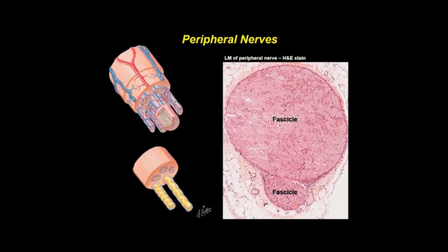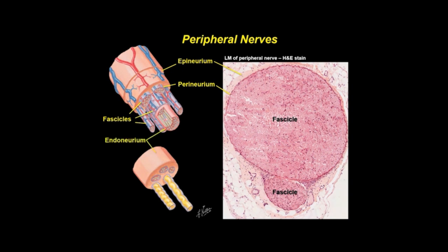A peripheral nerve consists of one or more bundles or fascicles of nerve fibers. In peripheral nerves with more than one fascicle, an outer layer of dense connective tissue, the epineurium, binds fascicles together. Surrounding each fascicle is the perineurium, which has multiple layers of flattened cells with intervening connective tissue. Endoneurium is a loose connective tissue that surrounds and supports individual nerve fibers and their support cells.